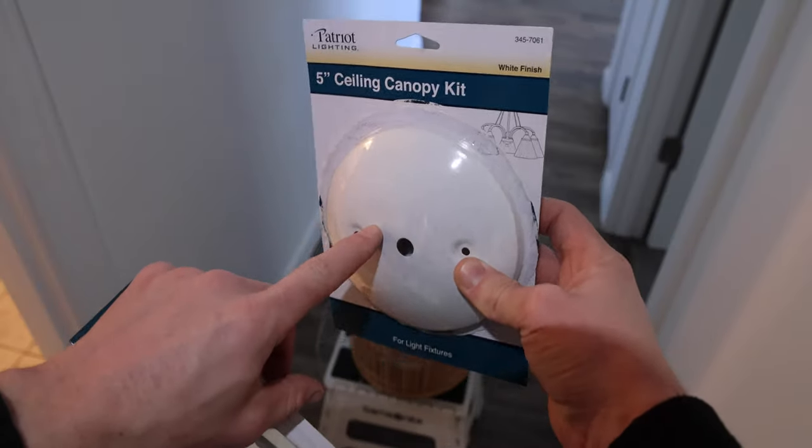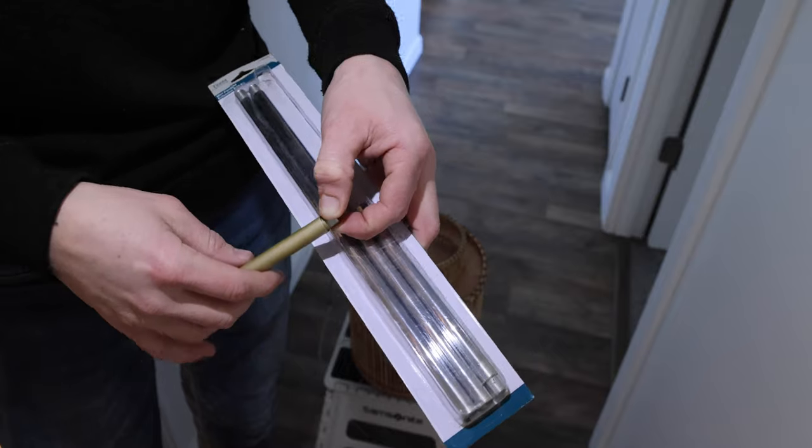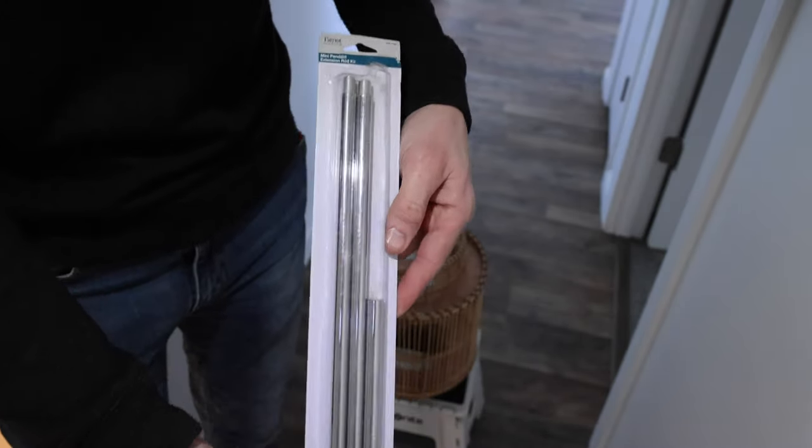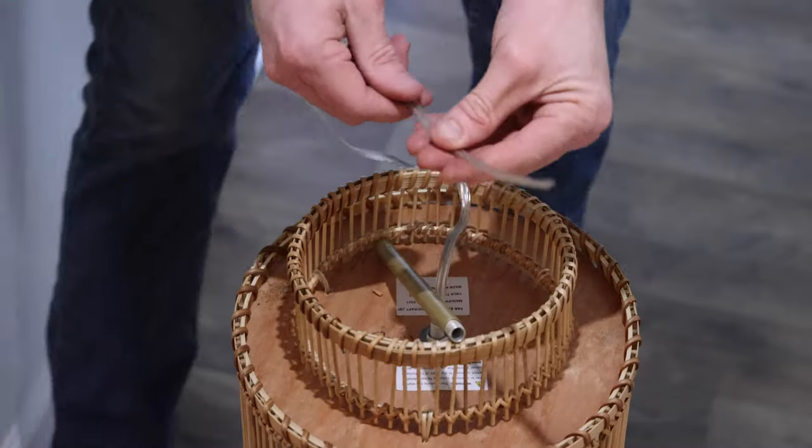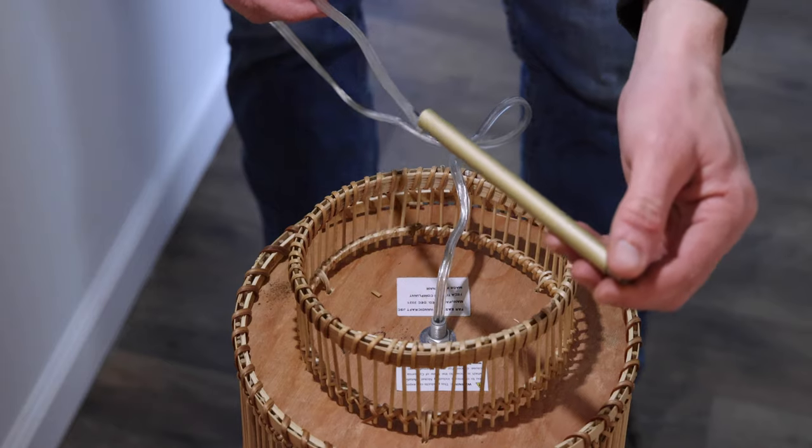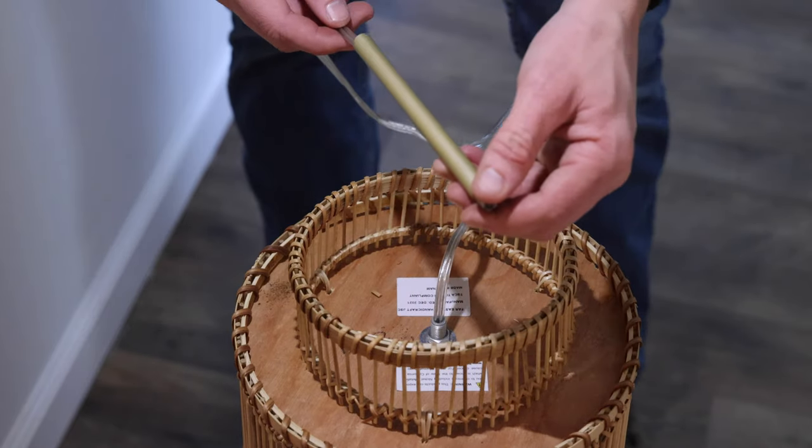Two products I needed to purchase for this was a canopy kit and also these extension rods. Unfortunately, I couldn't buy only one, so we have three left over for any other projects I might have. I did spray paint the extension rod gold to match the other decorations of the house.